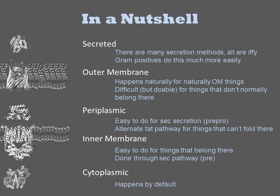Finally, there are many ways to secrete a protein, but it is often challenging to do so in E. coli. Since gram-positive bacteria lack the outer membrane, the mechanisms of periplasmic targeting result in secretion in these organisms, and the process is much more efficient. Thus, in most biotechnology applications that involve protein secretion, either a B. subtilis strain or a Pichia yeast is typically employed.